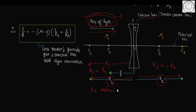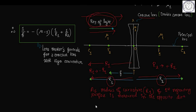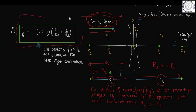As the radius of curvature R1 of the first refracting surface of the concave lens is measured in the opposite direction of the incident ray of light, R1 tends to minus R1, but R2 tends to plus R2. Finally, we get the Lensmaker's formula for a concave lens with proper sign convention.